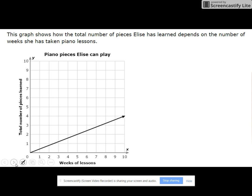Let's try another one. How about this one? This one says piano pieces Elise can play. So this graph shows the total number of pieces she can play. It depends on how many weeks she has taken piano lessons.